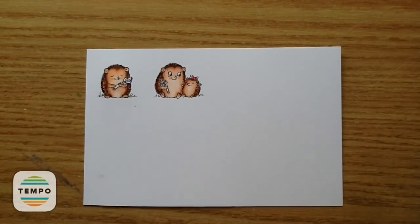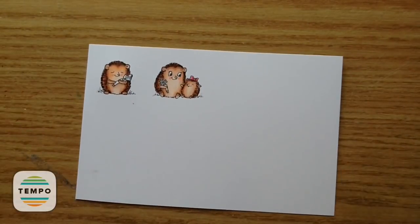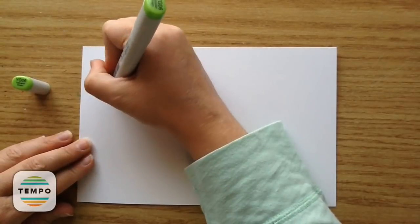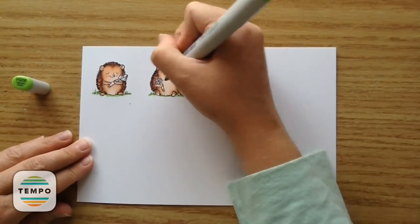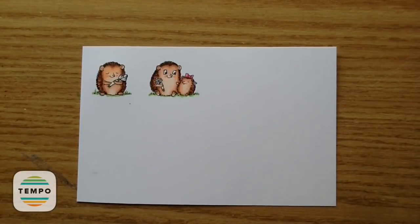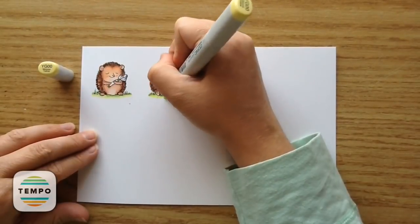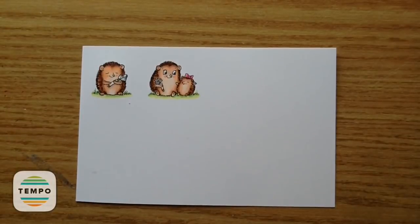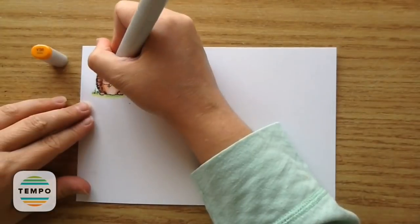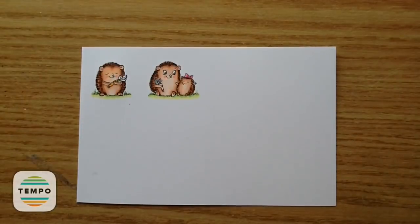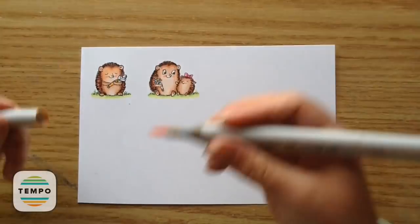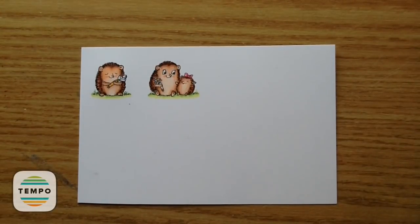And now I'm going to do the bow. I used RV04 and RV02. And then I'm using YG06 for the grass. And I'm just adding all the darkest bits and the green parts on the flowers as well. And then I used E00 for the bottom part of the grass. Then I used Y35 and Y32. And then I used Y38 for the inside of the flowers.